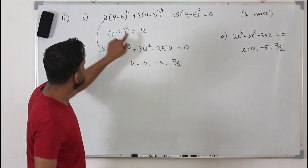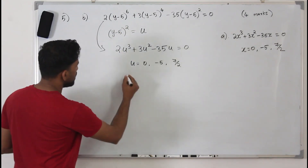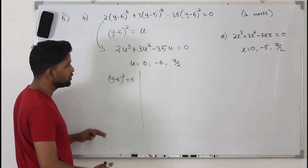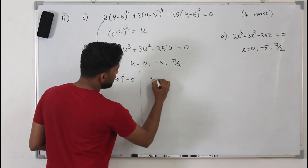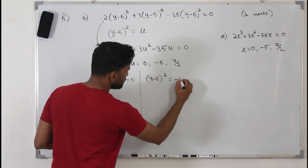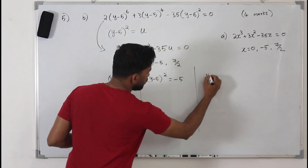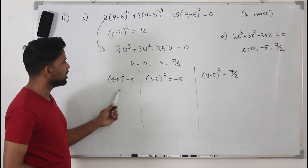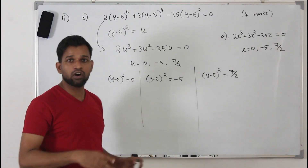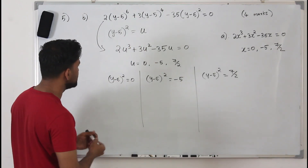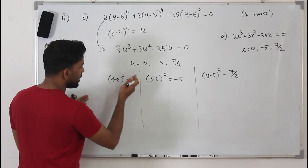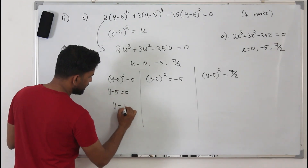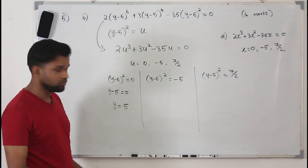Now replace U back with (y-5)². So the three equations become: (y-5)² = 0, (y-5)² = -5, and (y-5)² = 7/2. Solve each by taking the square root of both sides. For (y-5)² = 0: y - 5 = 0, so y = 5. That's our first real solution.